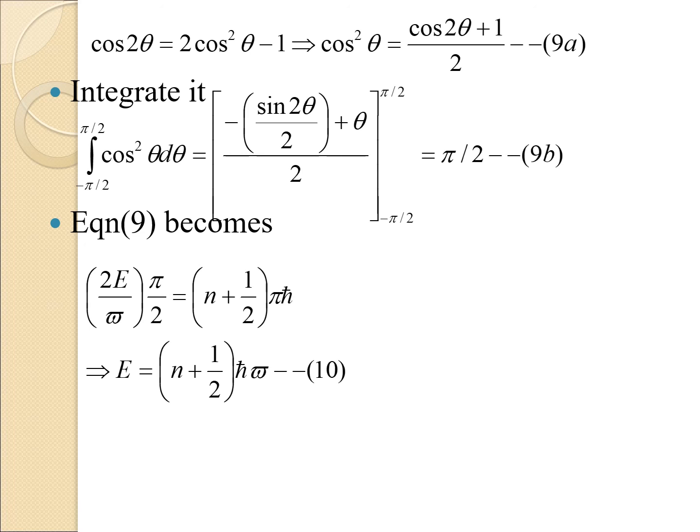Substituting back, we get (2E/ω) · (π/2) = (n + ½)πℏ, which simplifies to E = (n + ½)ℏω. This is the energy value for the harmonic oscillator, derived using the WKB approximation. Thank you.